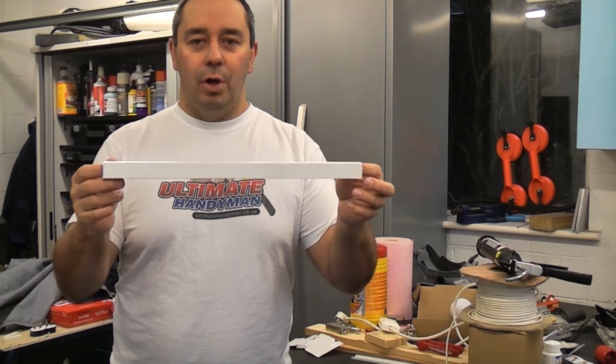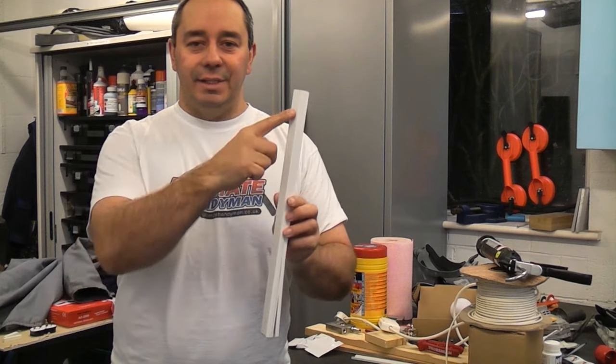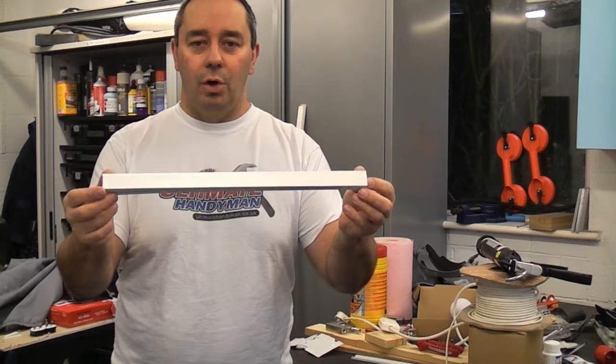You can drill and fix it to the wall but it is time-consuming. You can also get mini trunking like this which has a self-adhesive pad on the back. This doesn't actually have that, so I'm now going to show you how to fix this to the wall quickly.